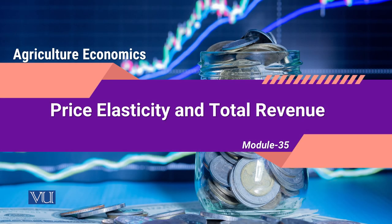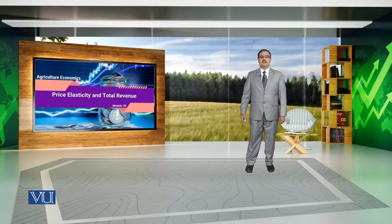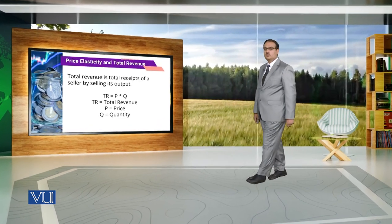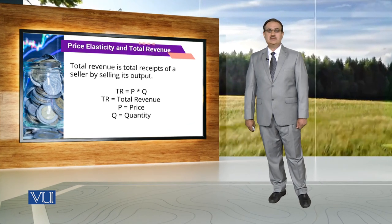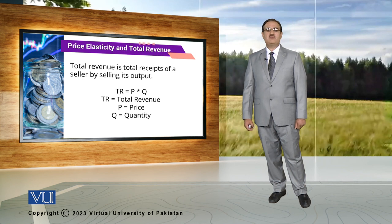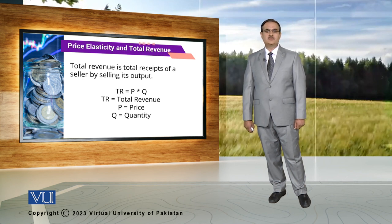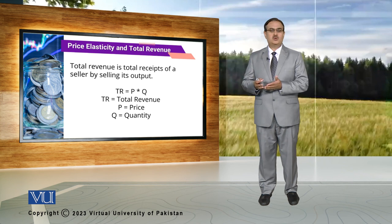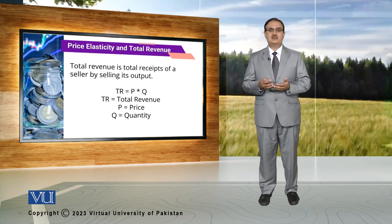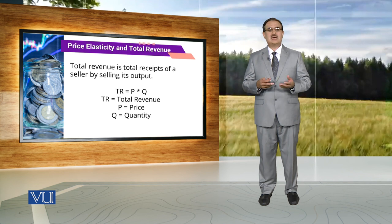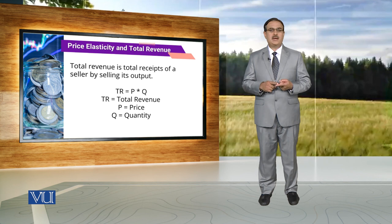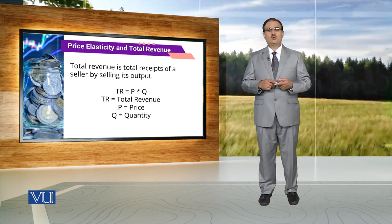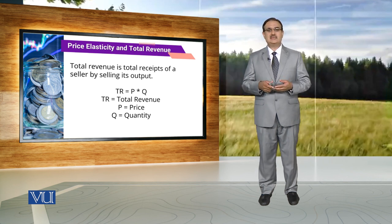Module 35: Price Elasticity and Total Revenue. There is an association between Price Elasticity and Total Revenue. Total Revenue is basically the total receipts of a seller from selling its output — obtained by multiplying the price of output with the quantity being sold in the market.